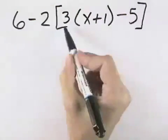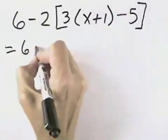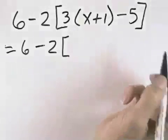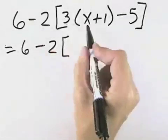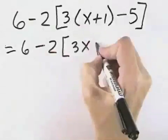We'll start by distributing the 3 through the parentheses x plus 1. We'll leave outside the square brackets for now because we're working inside our grouping symbols, and 3 times x is 3x, and 3 times 1 will be plus 3.